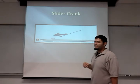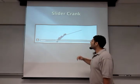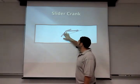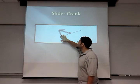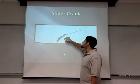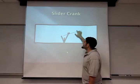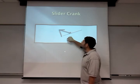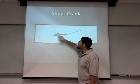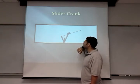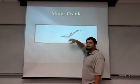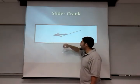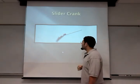Here we have our slider crank. As you can see, we have a rotational motion — counterclockwise — turning into a linear motion, up and down on our slider crank. We're at an angle, and this is our trajectory S. It's at a constant angle of 20 degrees, so it follows along our length.